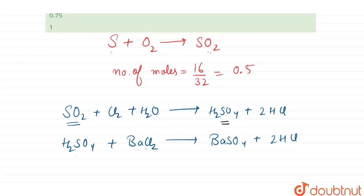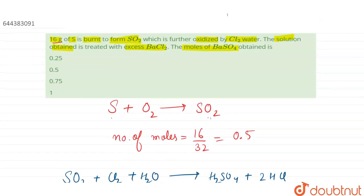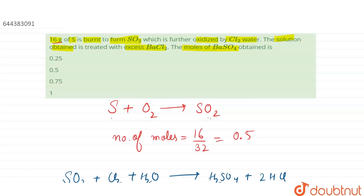This 0.5 moles of H2SO4 when treated with BaCl2, 0.5 moles will produce 0.5 moles of barium sulfate. So the moles obtained of barium sulfate is 0.5. Now let us have a look at the options.